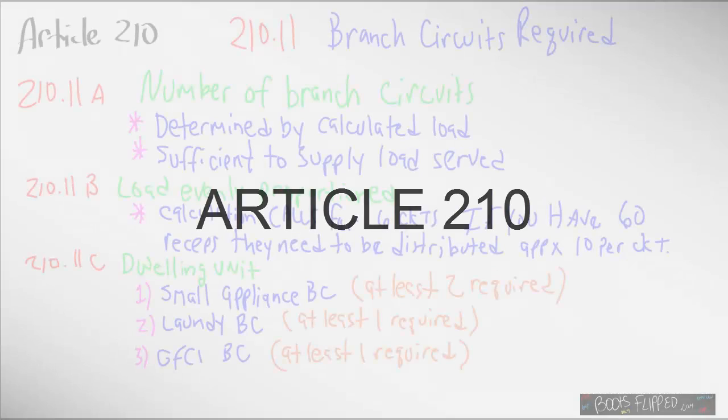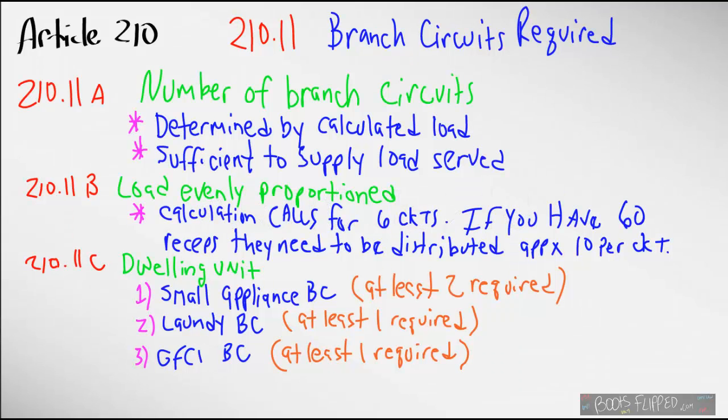Let's dive a little farther into Article 210. We left last time off at 210.8, which was GFCI receptacles and where they're required. Now we're going to get into 210.11, which is where branch circuits are required.